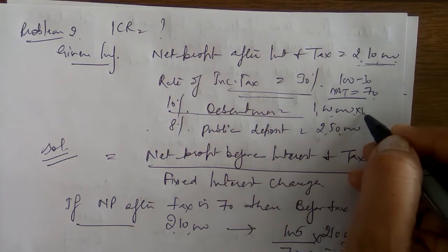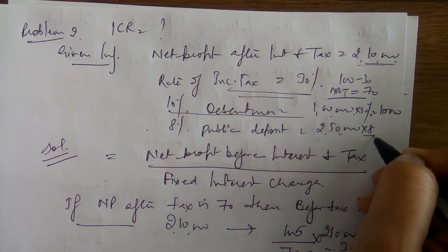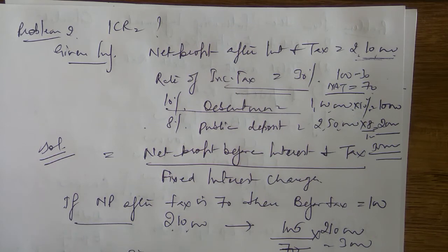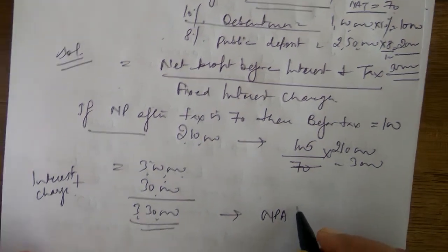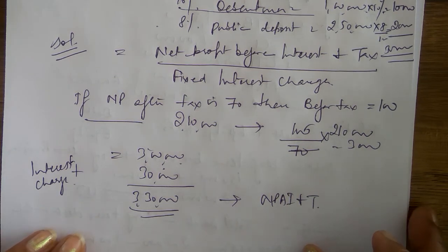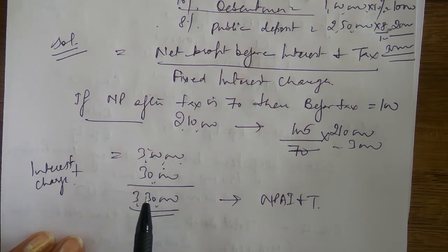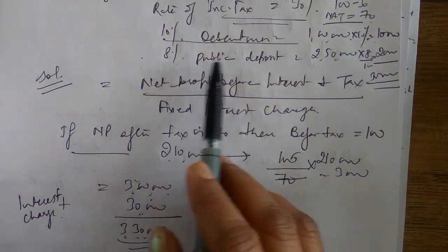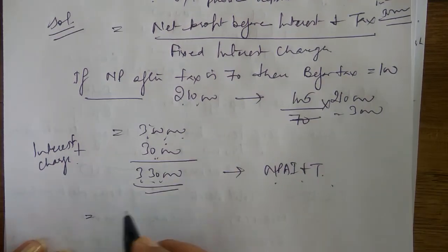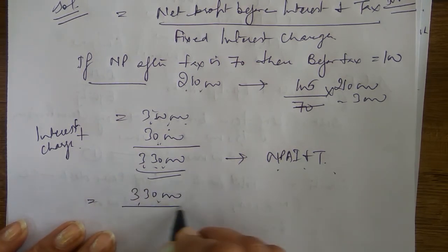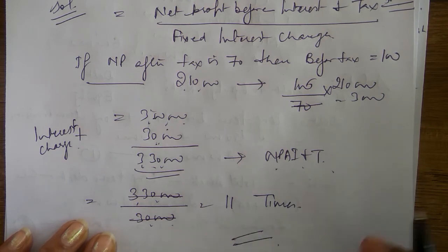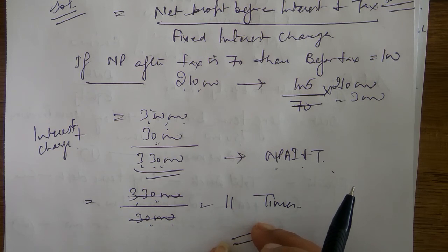Interest charges: 10% on debentures of ₹1,00,000 = ₹10,000; 8% on public deposit of ₹2,50,000 = ₹20,000. Total interest = ₹30,000. Net profit before interest and tax = ₹3,00,000 + ₹30,000 = ₹3,30,000. ICR = ₹3,30,000 / ₹30,000 = 11 times. This means fixed interest charges can be paid 11 times from profits before interest and tax.